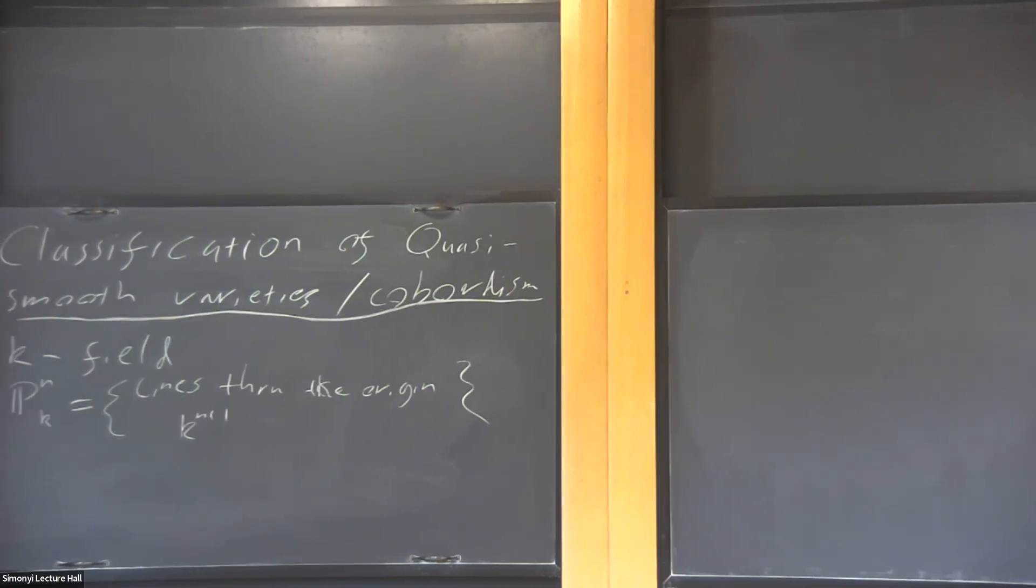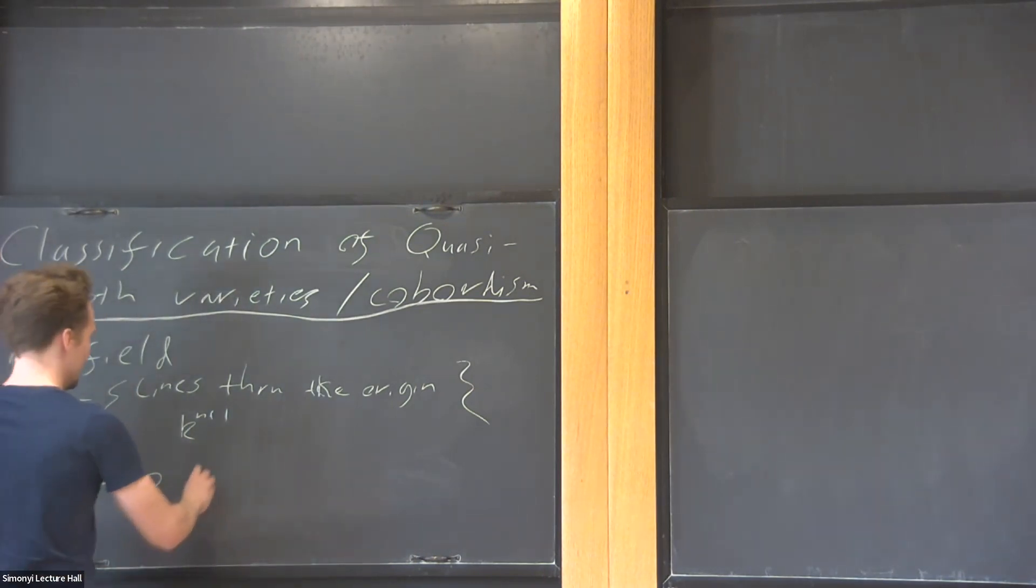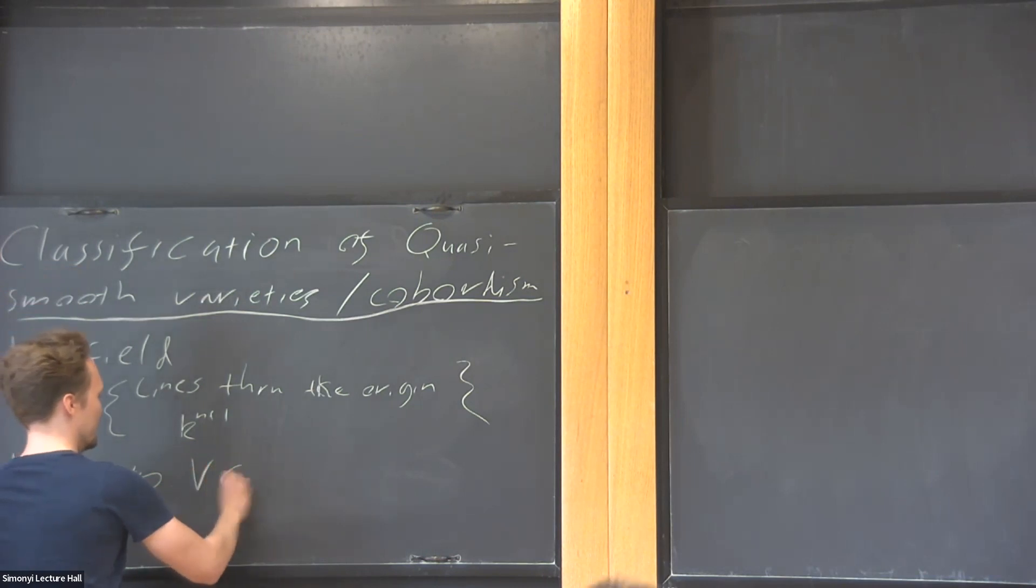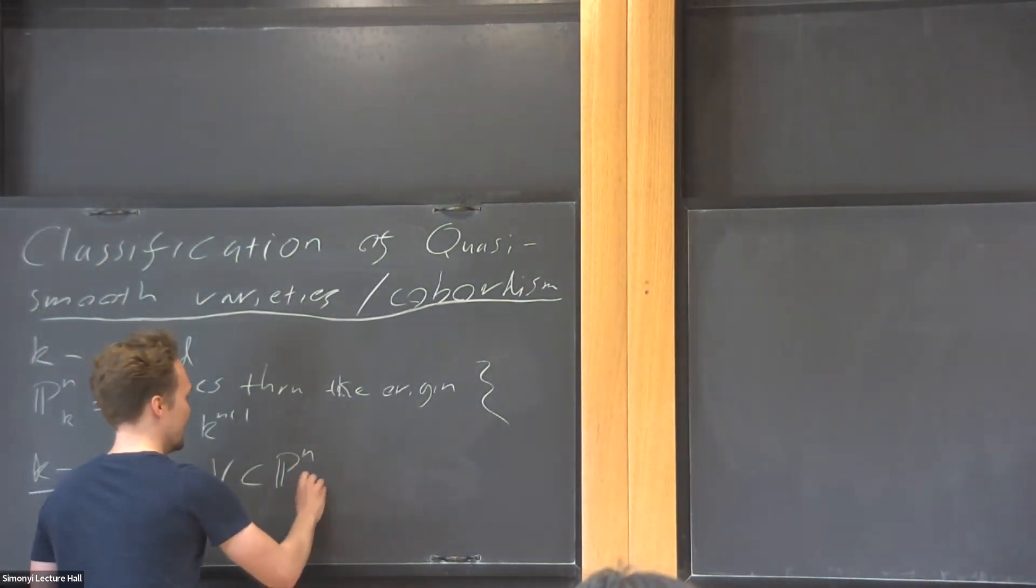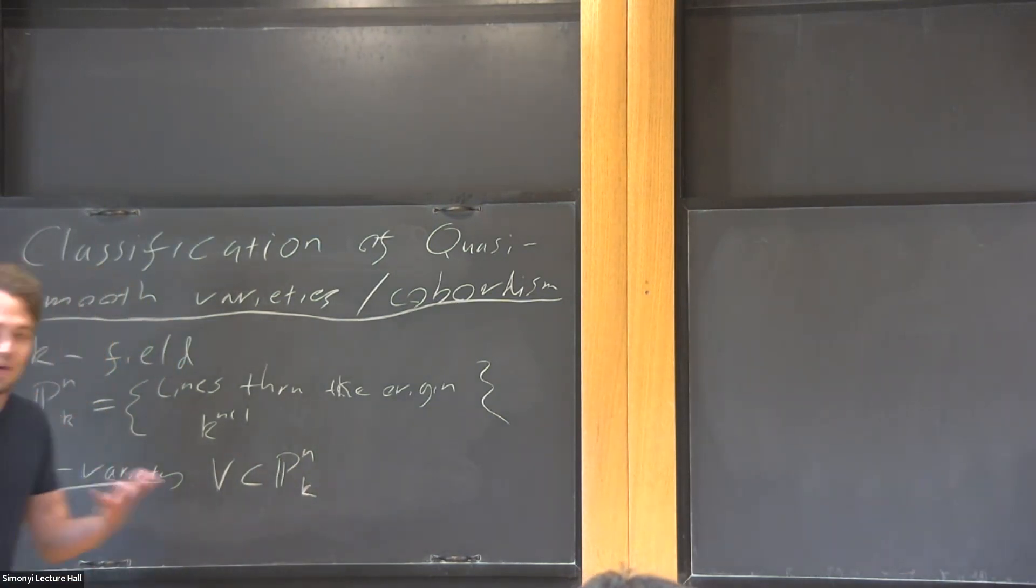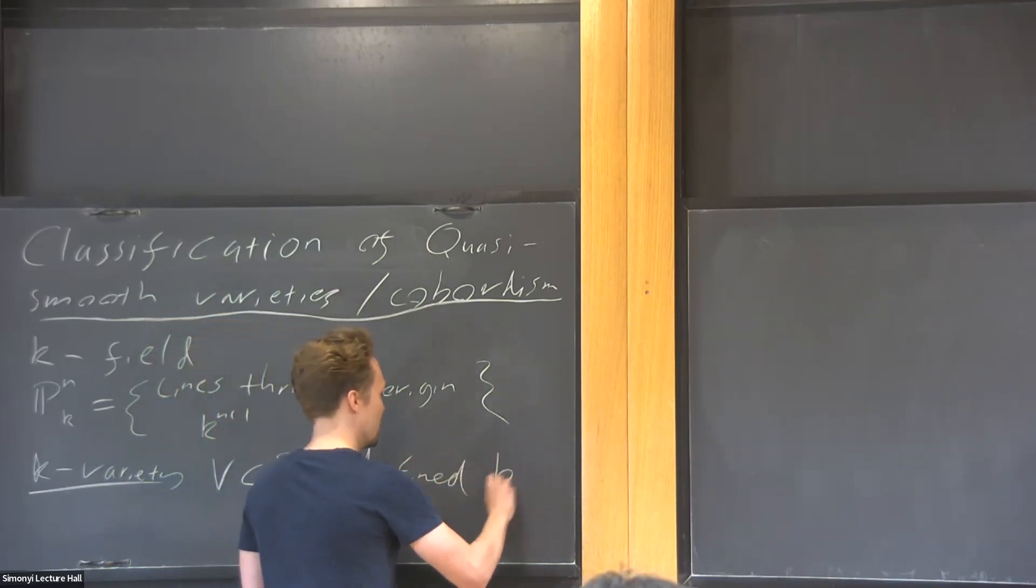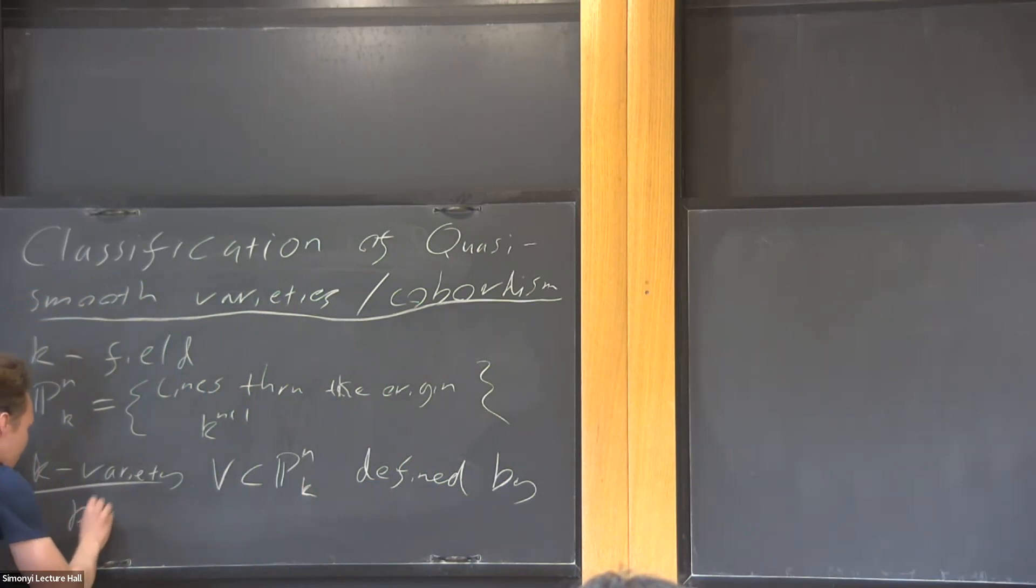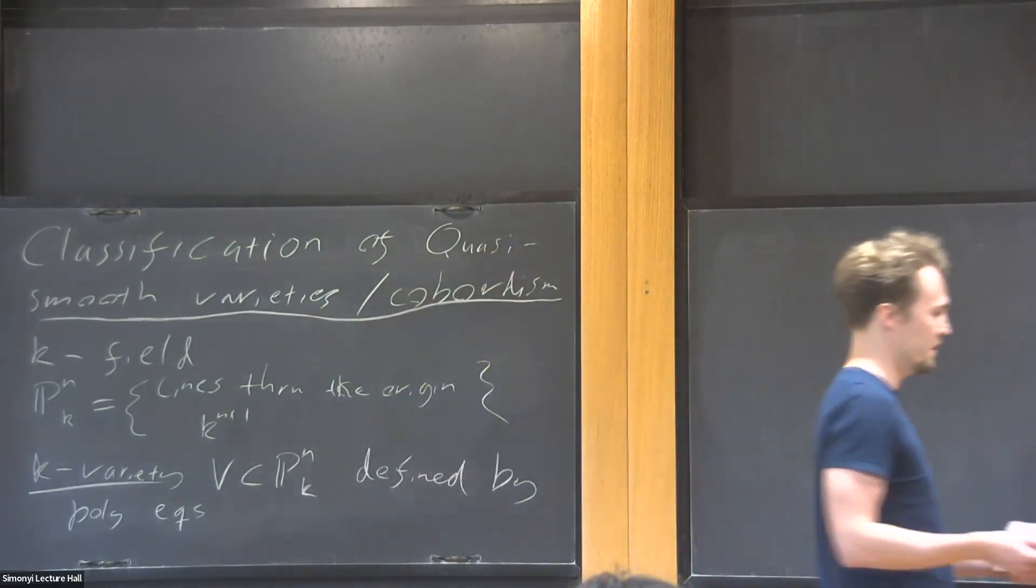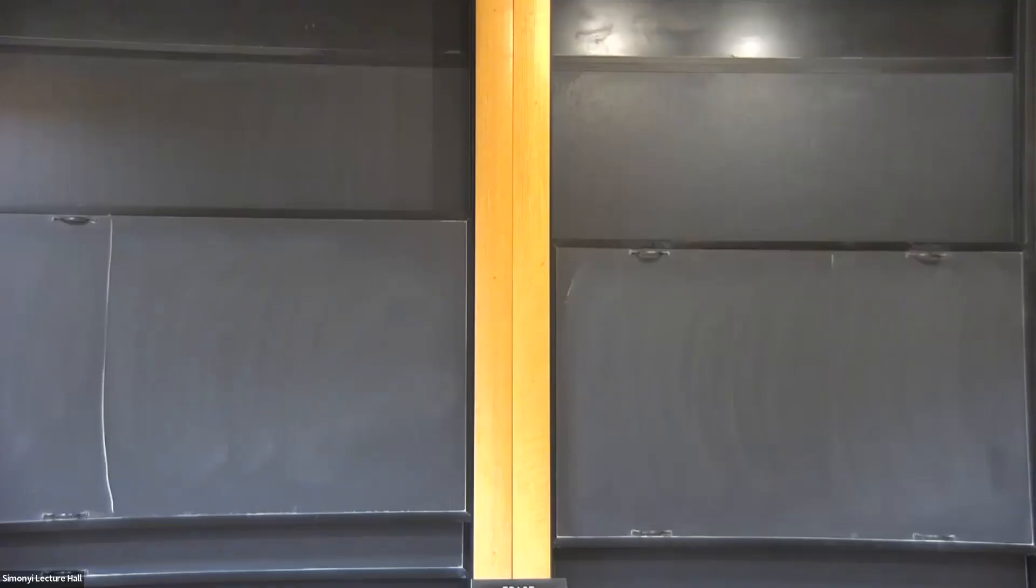That's a projective space. For today, a variety over k is just a subset of this projective space, but not just any subset. It has to be defined by polynomial equations. By define, I mean it's like the solution set to some polynomial equation.